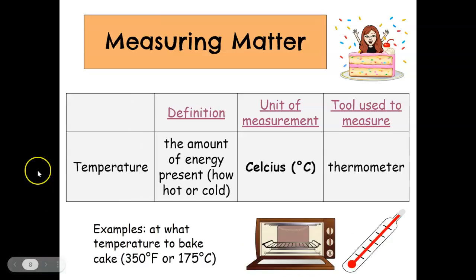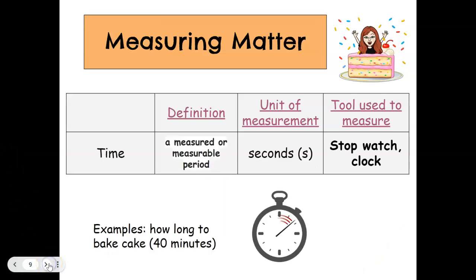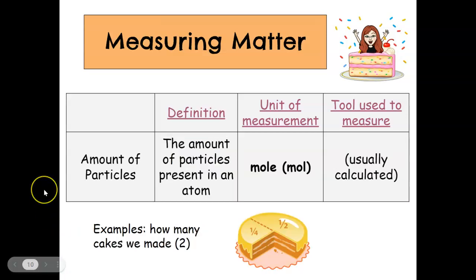And then temperature is the amount of energy present, so how hot or cold something is. We're going to measure this in Celsius and we would use a thermometer to measure temperature. And then time is just a measurable period of time. The base unit, so the base metric unit, would be in seconds and then we would use a stopwatch or a clock to measure that. It's pretty self-explanatory.